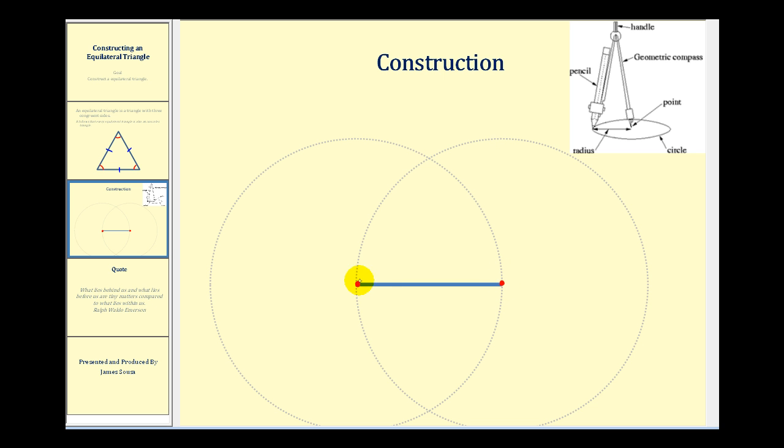So now with the point on one of the end points, let's say this end point here, we're going to swing an arc above this blue segment. So it would look something like this.